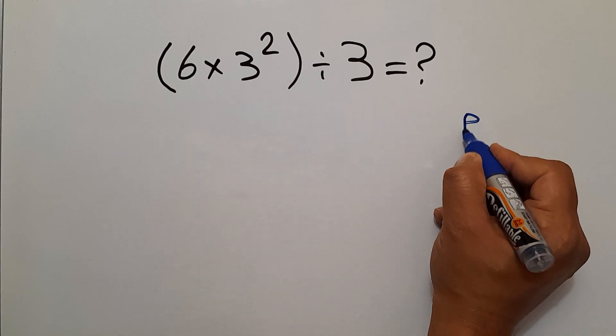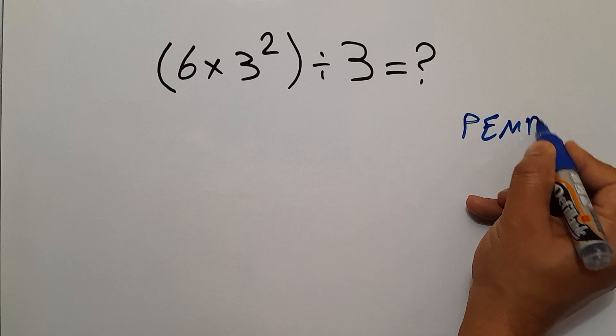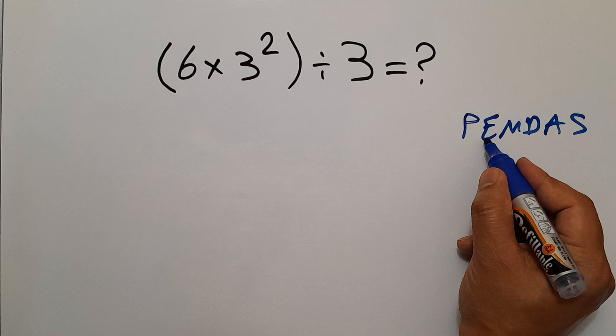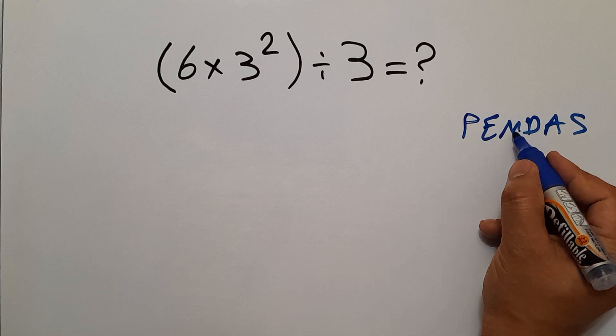The order of operations is PEMDAS. P stands for parentheses, E stands for exponents, M and D stands for multiplication and division, and A and S stands for addition and subtraction.